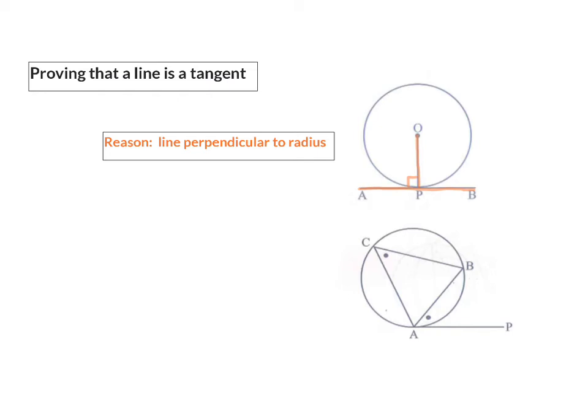Our second theorem is the theorem that says the angle that is formed between a tangent and a chord is equal to the angle in the opposite circle segment. So, if there is a line that we need to prove is a tangent and we can prove that the angle formed by this line and a chord is equal to the angle in the opposite circle segment, we can say that that line is a tangent to the circle. And my reason here is converse tangent chord theorem.